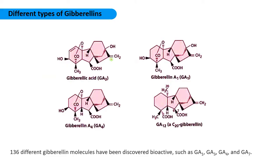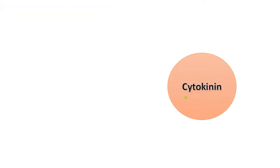Nearly 136 different gibberellin molecules have been identified. GA3 is the most studied and common, GA1 is involved in elongation, and GA9 is involved in flowering.